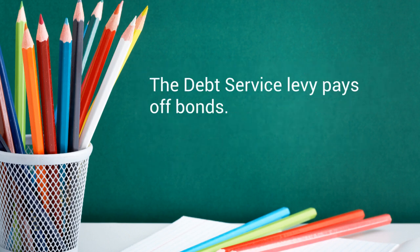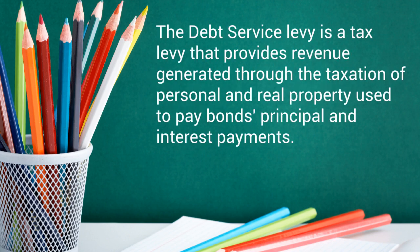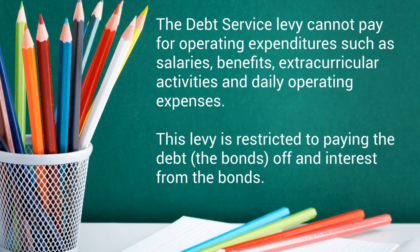The debt service levy pays off the bonds. The debt service levy is a tax levy that provides revenue generated through the taxation of personal and real property, used to pay bond principal and interest payments. The debt service levy cannot pay for operating expenditures such as salaries, benefits, extracurricular activities, and daily operating expenses. This levy is restricted to paying off the bonds and the interest from the bonds.